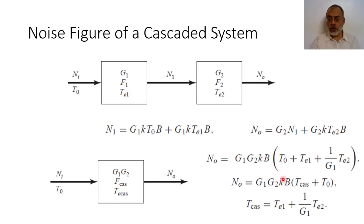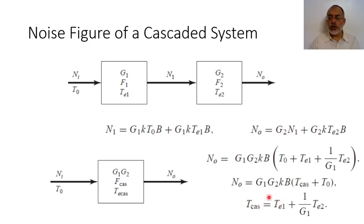From these two expressions, we can identify that the equivalent cascaded temperature T_cascaded equals TE1 plus (1/G1)·TE2. That is, the equivalent cascaded temperature equals the noise temperature of the first network plus 1 over the gain of the first network multiplied by the equivalent noise temperature of the second network.